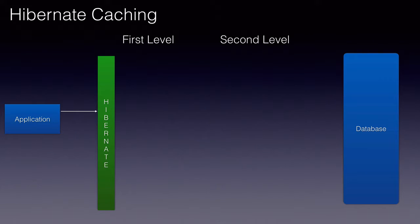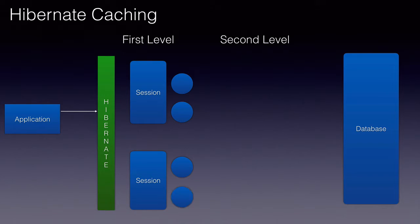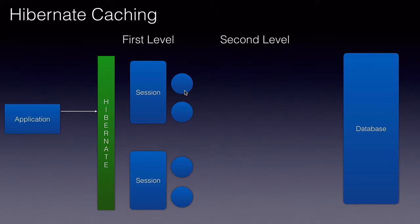The first level cache is associated with a session object. Hibernate will execute all the updates, inserts, and deletes we do against the objects in the session cache. It will flush those changes only when the transaction is committed or when we explicitly call the flush method. But the changes will be committed to the database only when the transaction is committed.